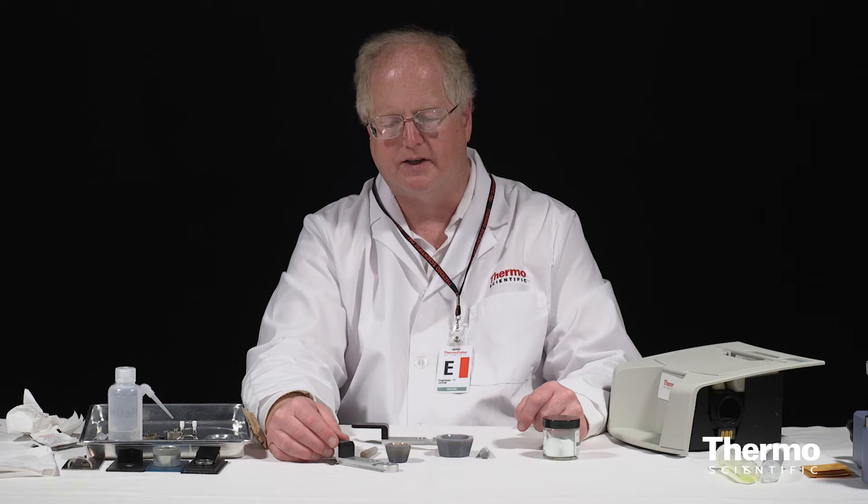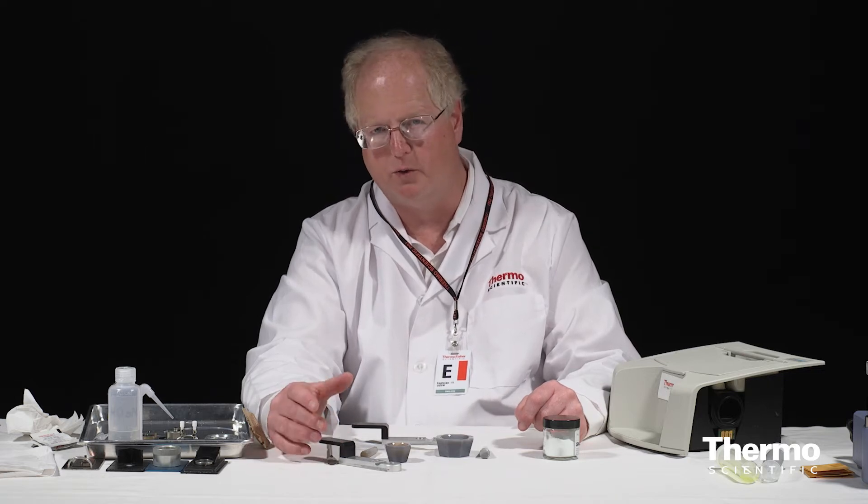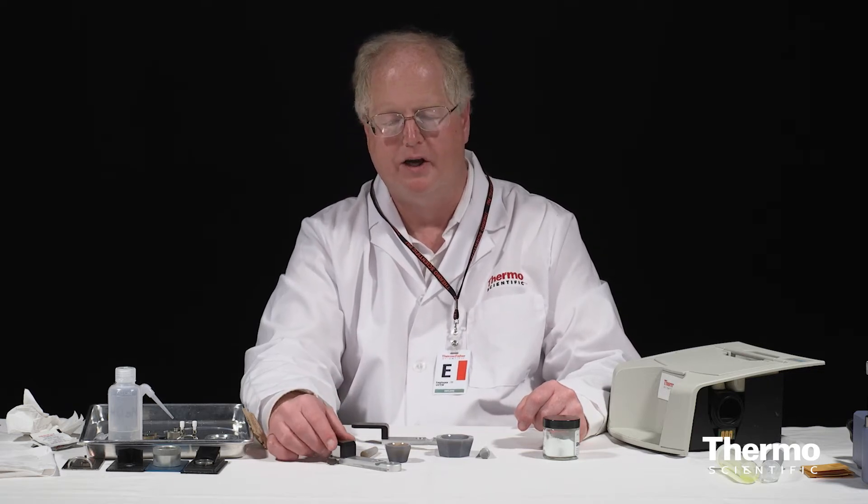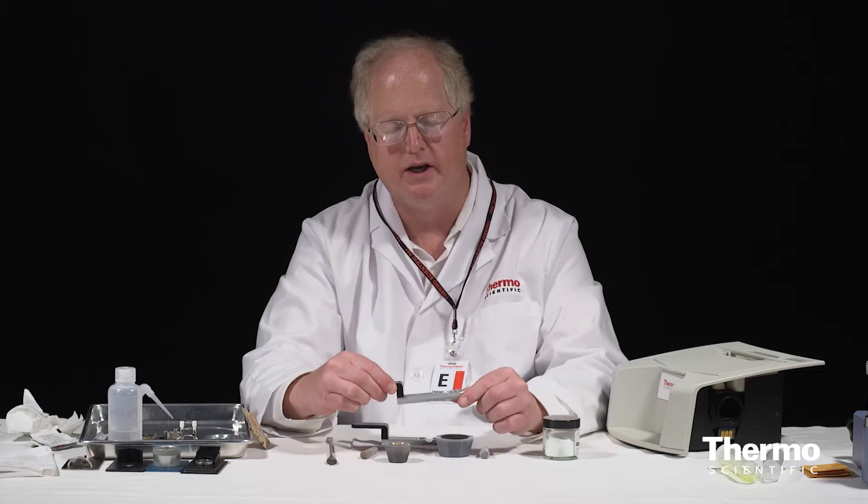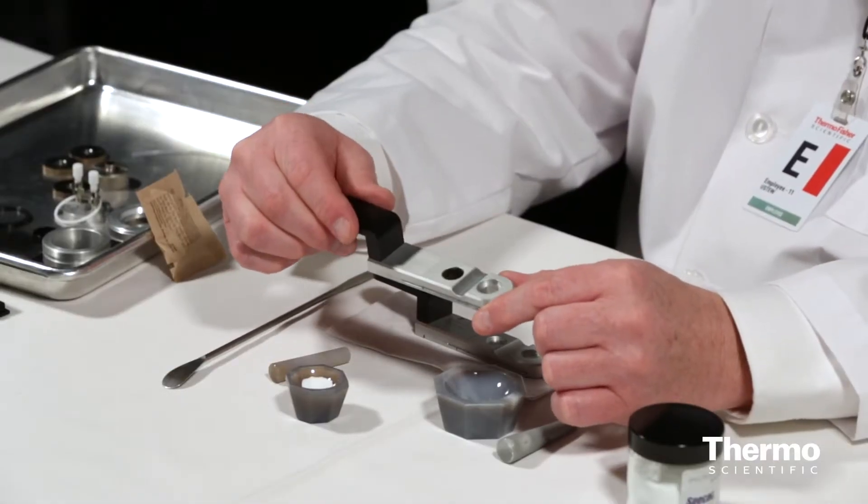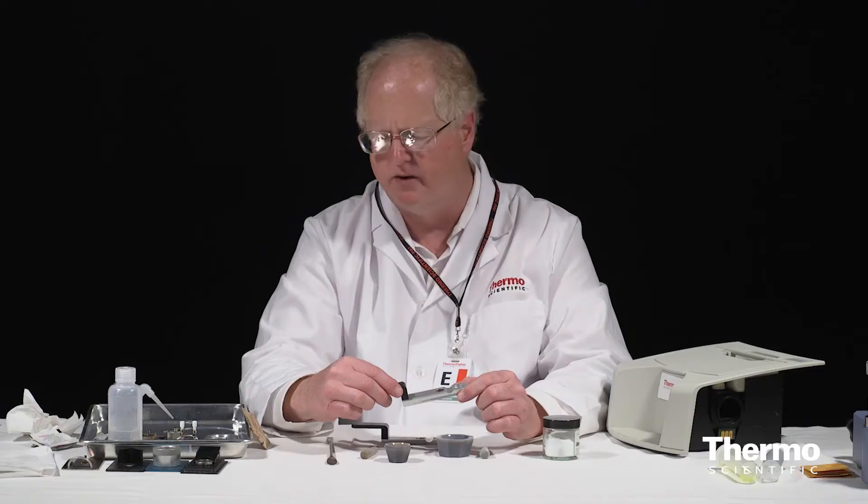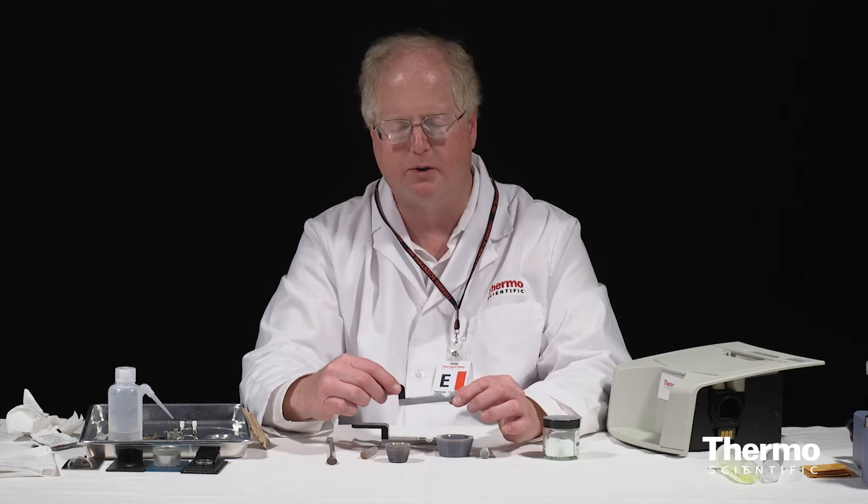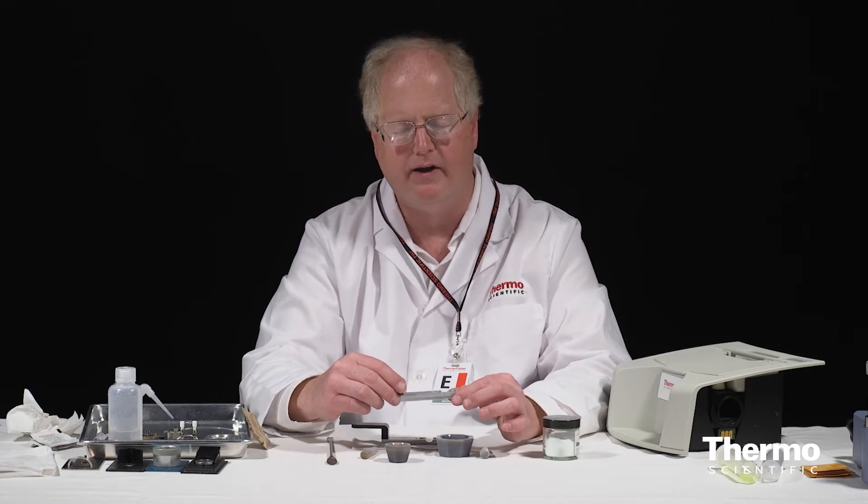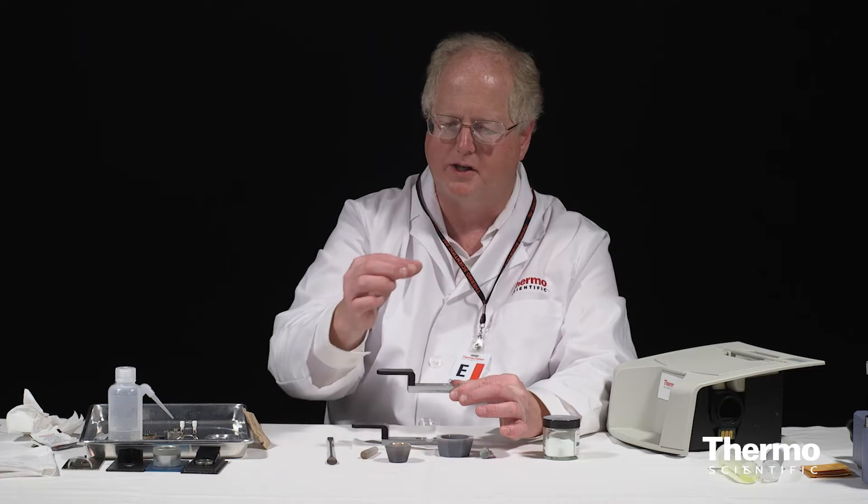For diffuse reflectance sampling, we're going to need to do a little bit of sample preparation. Before I do that, I just want to show this. This is the slider which is going to be used for the sample. Different DRIFTS accessories can be approached in different ways. Some of them will have a slider or something that goes at the top of the accessory and the light is directed down. Others, the sample goes underneath.